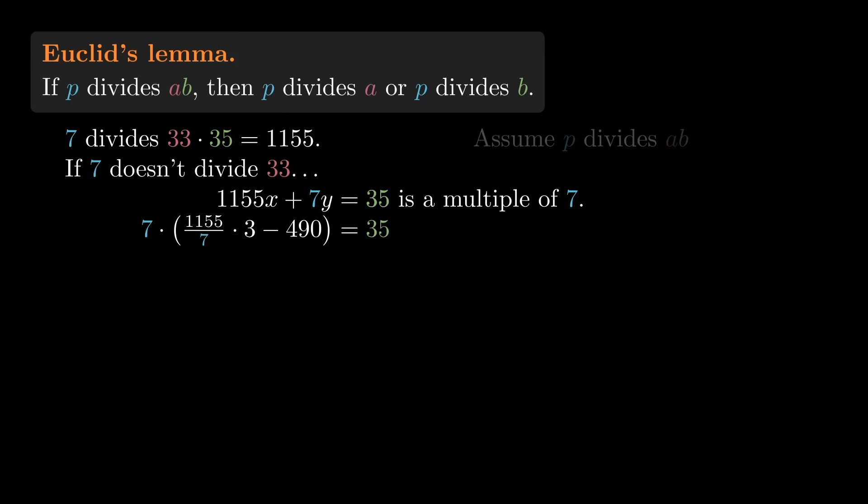So the last step in understanding why Euclid's Lemma is true is to figure out how to find x and y values that work in general. Thinking informally for a second, if we look at this equation, which can be rewritten like this,